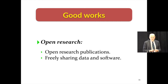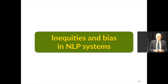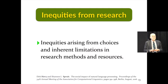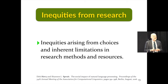In the second part of my talk, I want to turn to the question of inequities and biases that arise in our systems. The first class of these is inequities and biases that arise from choices that are made by researchers, or choices that are forced upon researchers, often by inherent limitations in our methods or in our resources. These have been characterized as exclusion.